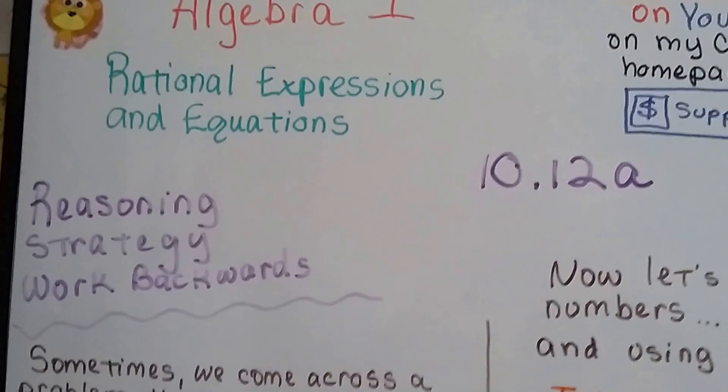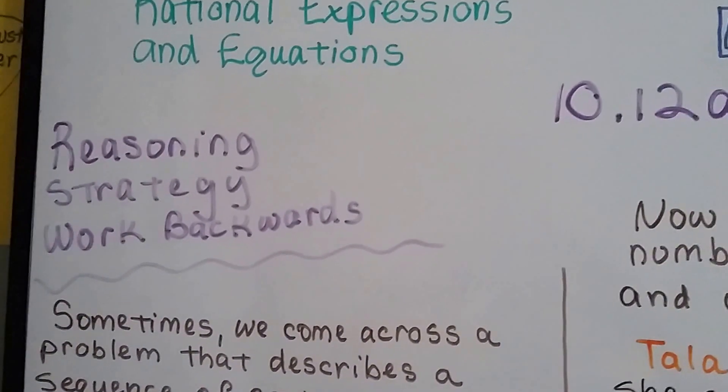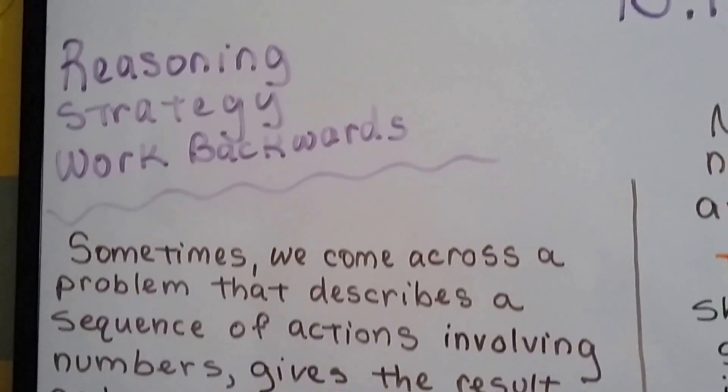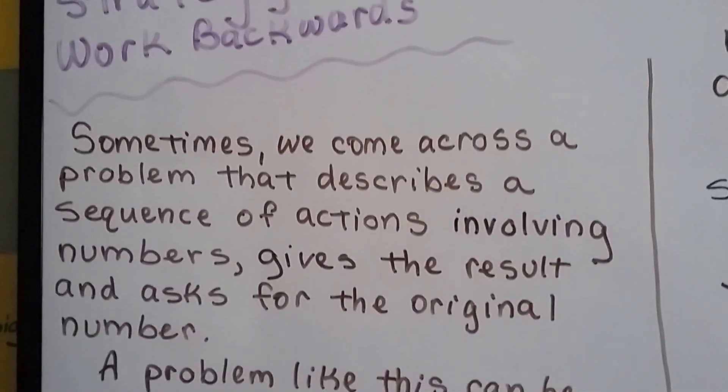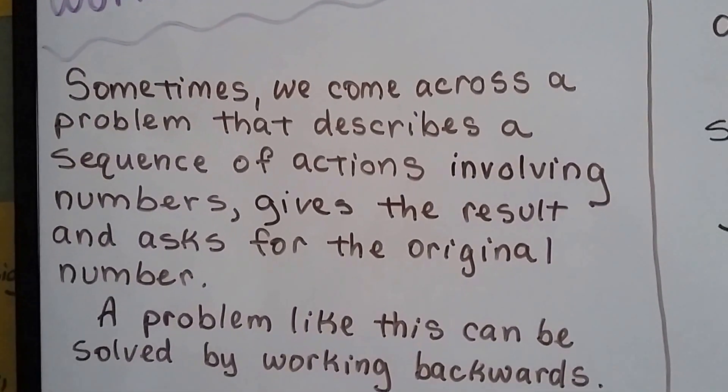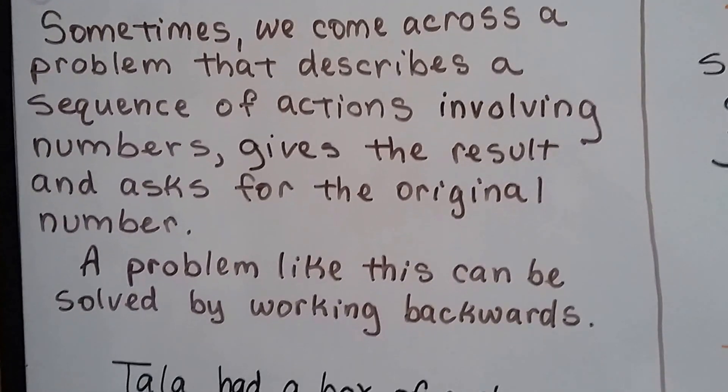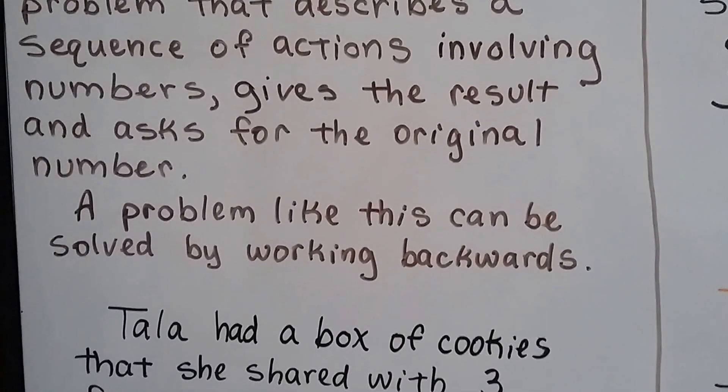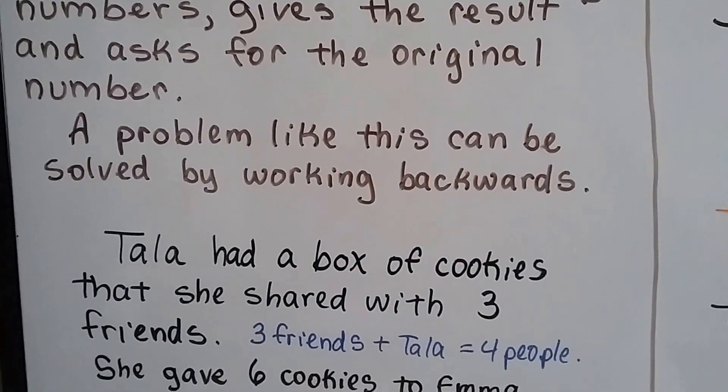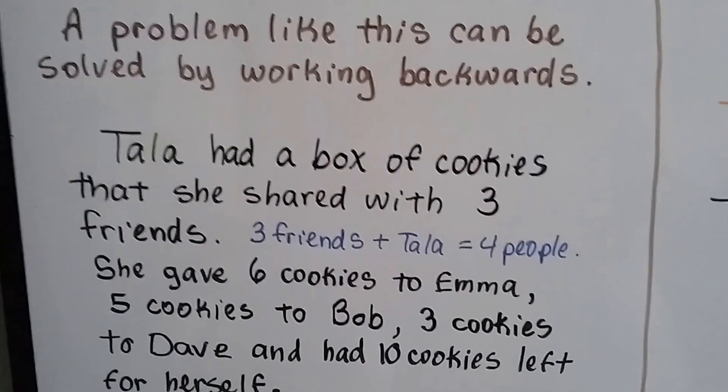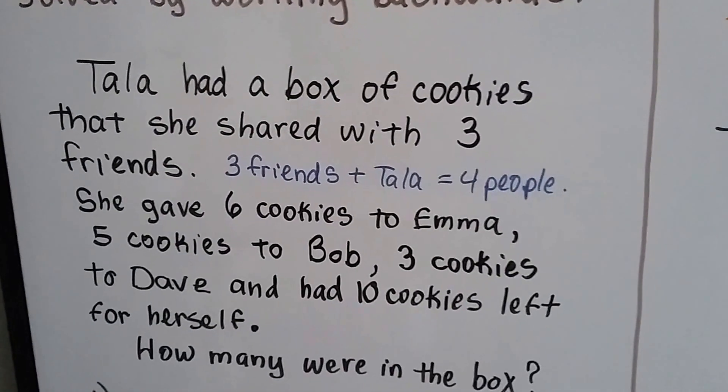Algebra 1, 10.12a. We've got a word problem reasoning strategy of working backwards. Sometimes we come across a problem that describes a sequence of actions that involve numbers, gives a result, and asks for an original number. A problem like this can be solved by working backwards. So here's a very easy version of what I'm talking about.